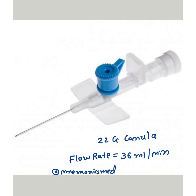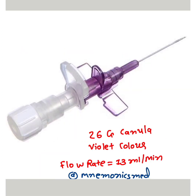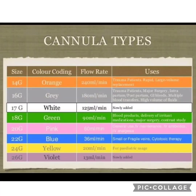This is the blue color 22 gauge cannula — flow rate is 36 ml per minute. As already mentioned, gauge is inversely proportional to size. This is the 24 gauge cannula — flow rate is 20 ml per minute, and it is mainly used for the pediatric age group. It is a yellow colored cannula. This is the biggest 26 gauge cannula, violet color, with a flow rate of 13 ml per minute.